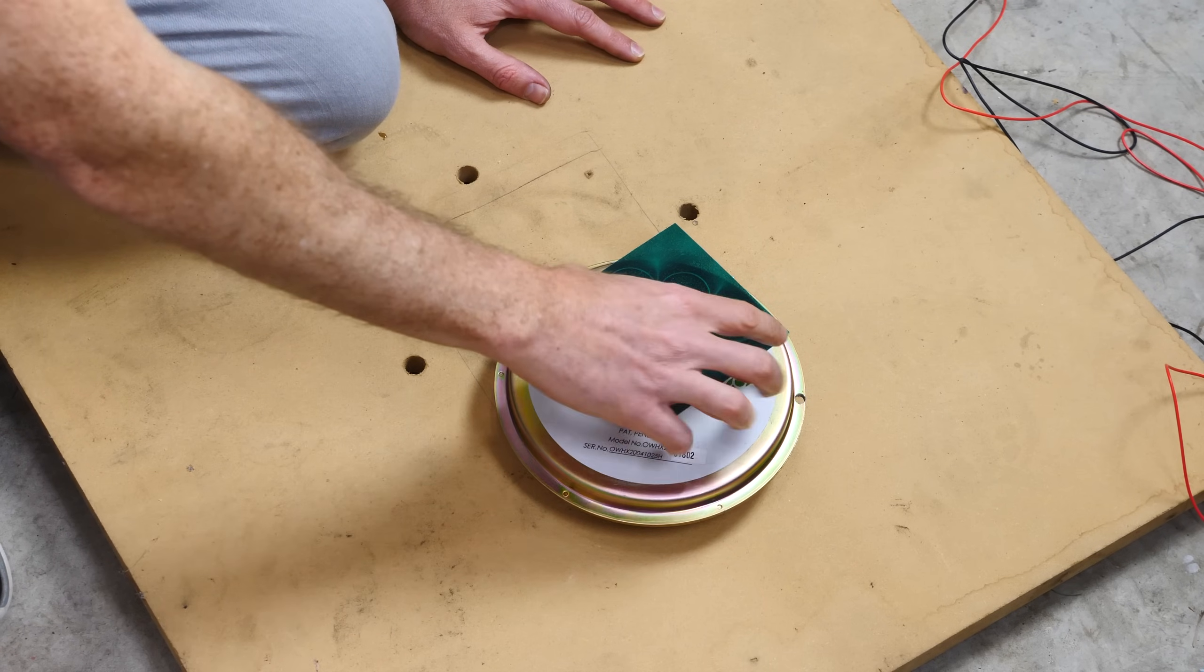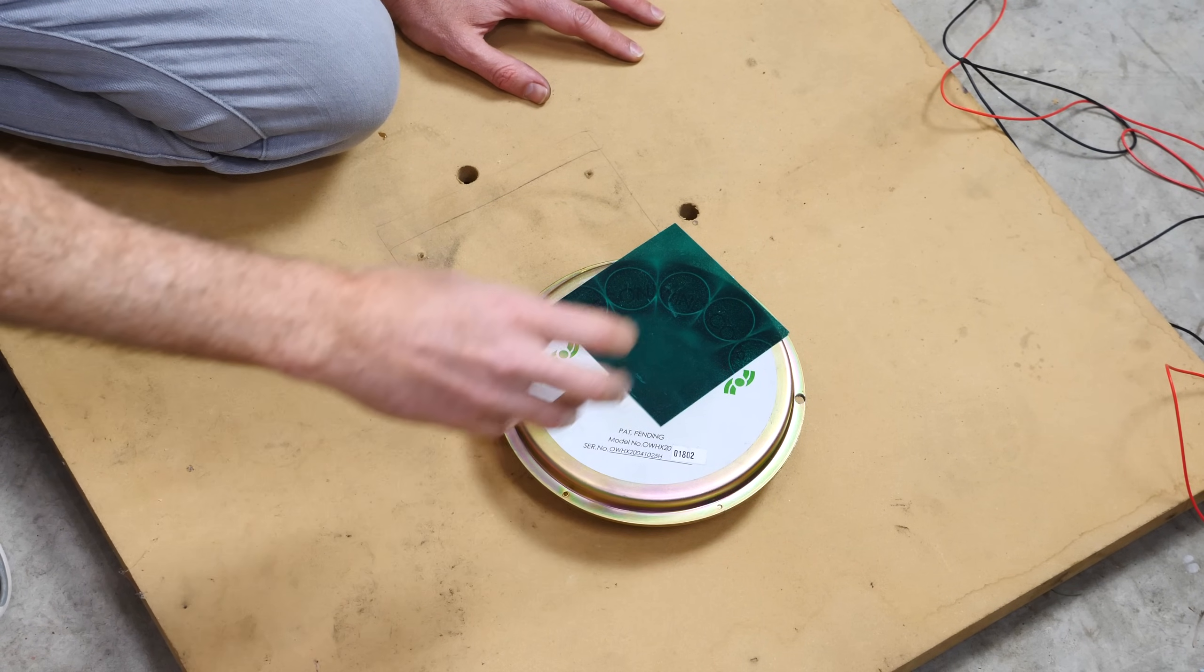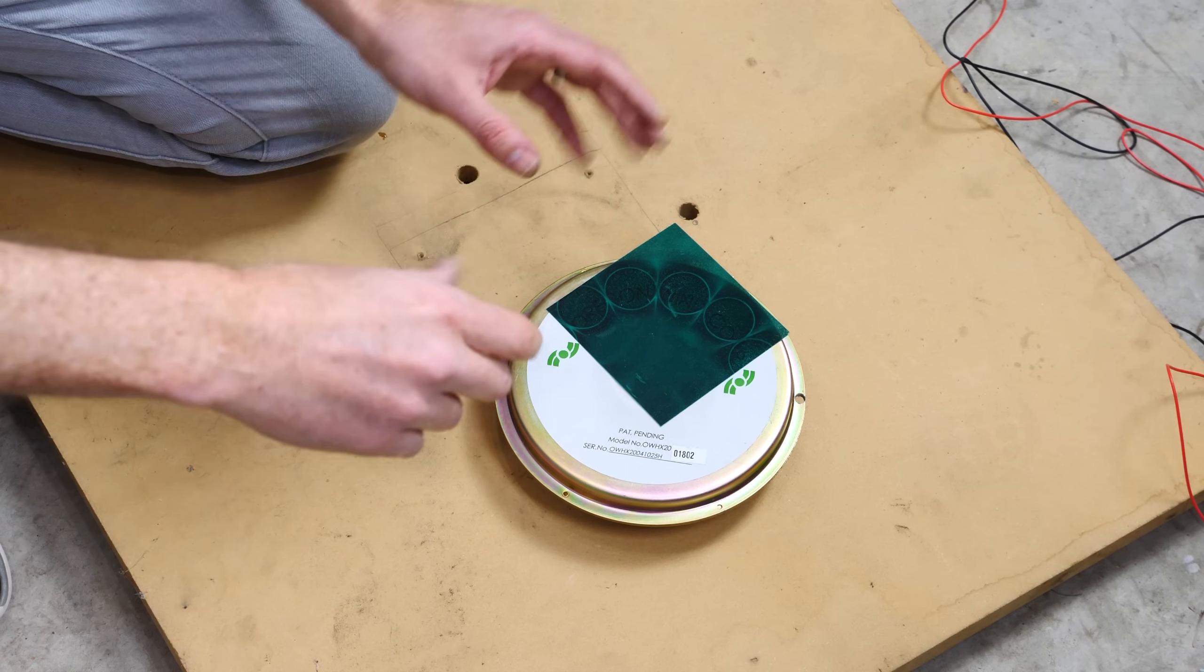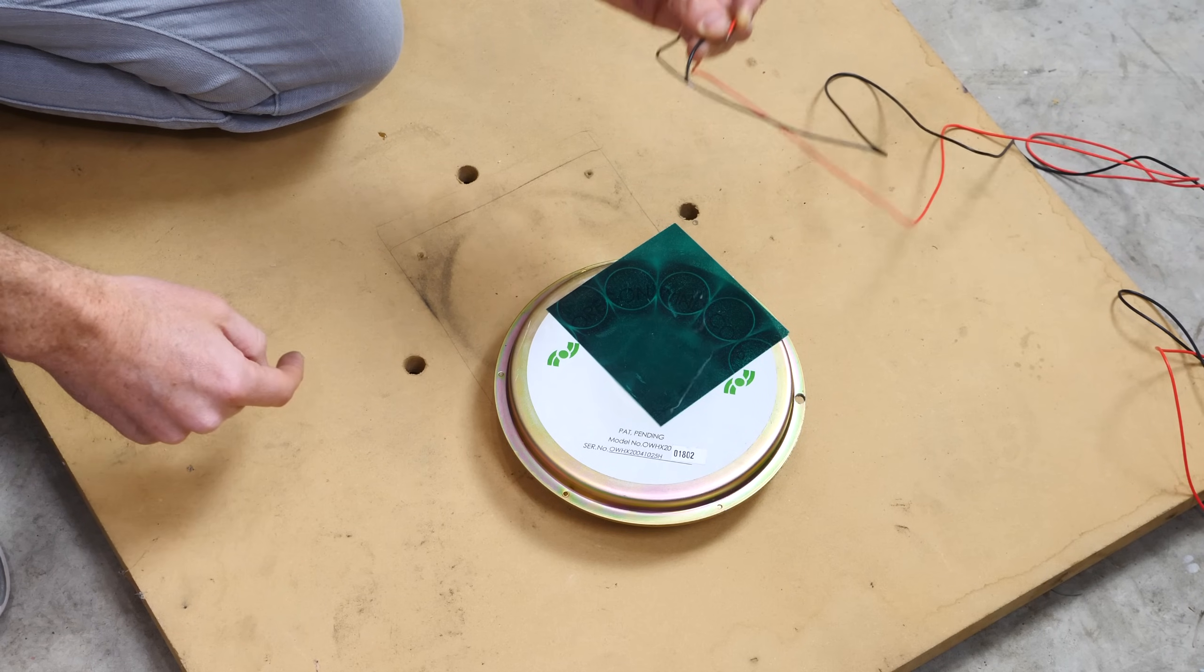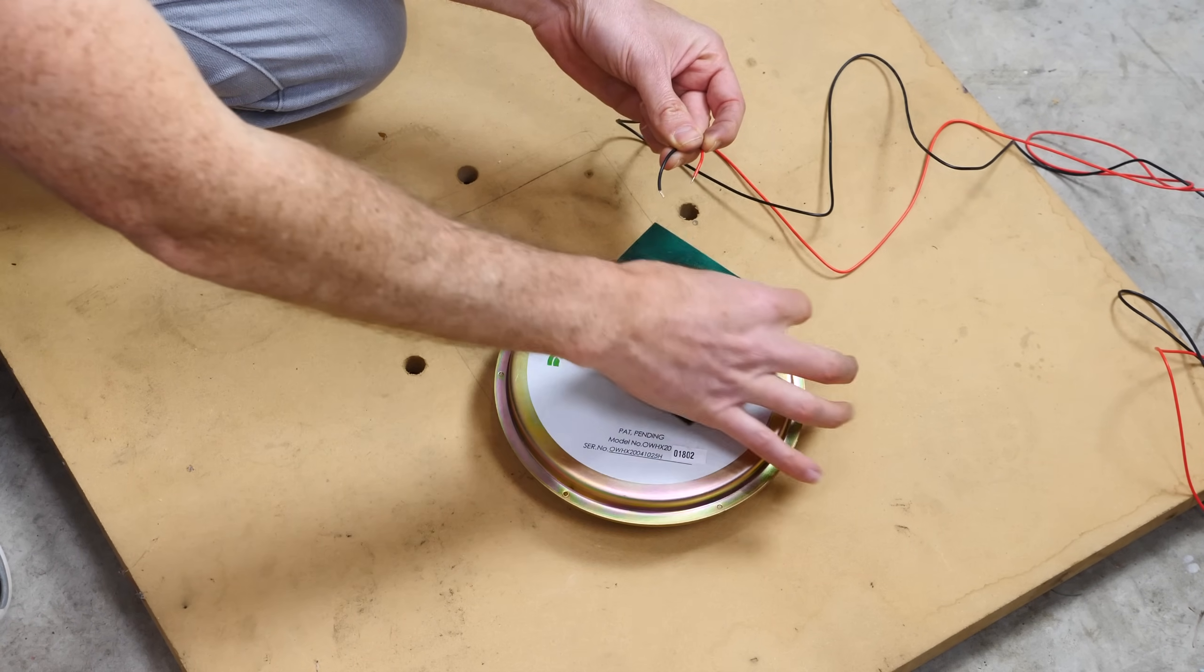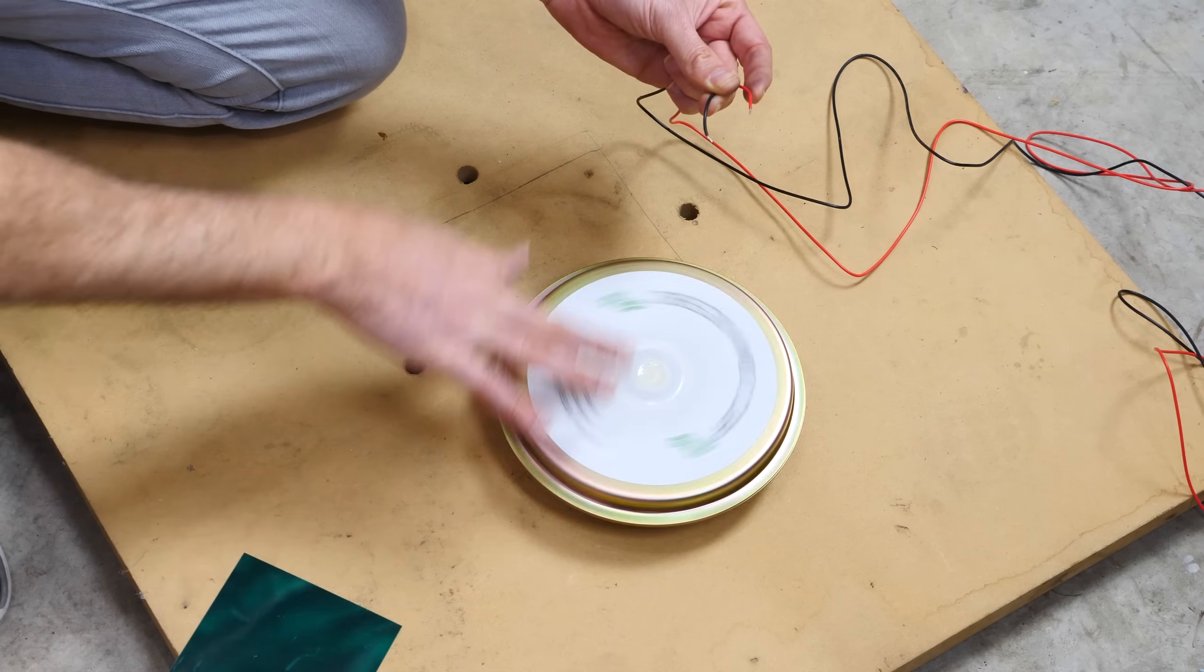Now the cool thing is, is when you turn magnets or move magnets near giant coils of wire, it generates a voltage in the wire. And so these are the two ends of all the coils of wire in there. And what that means is that when I turn this, I can generate a voltage.